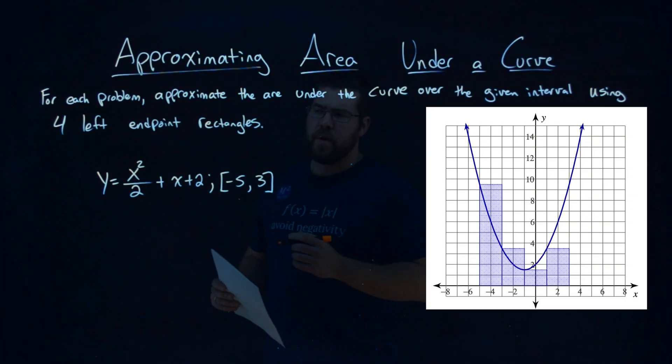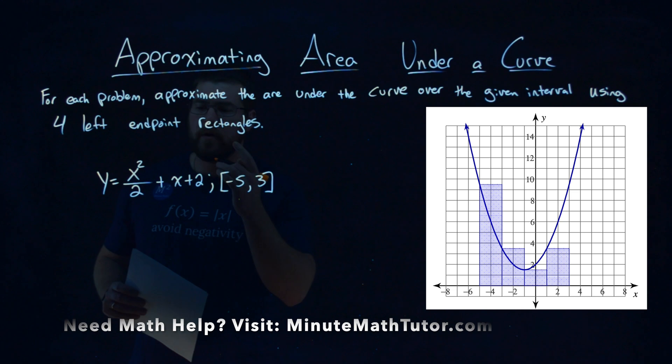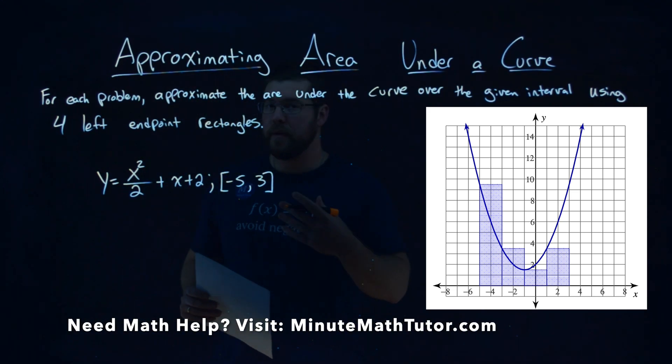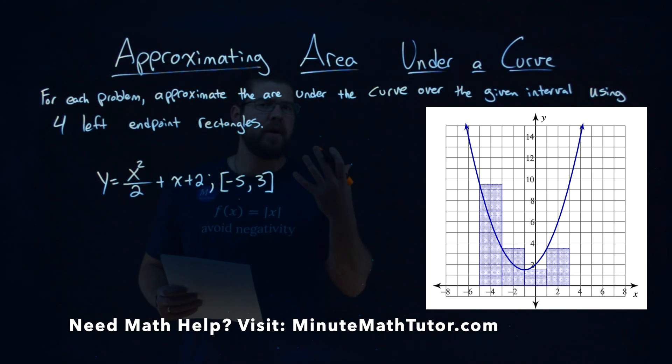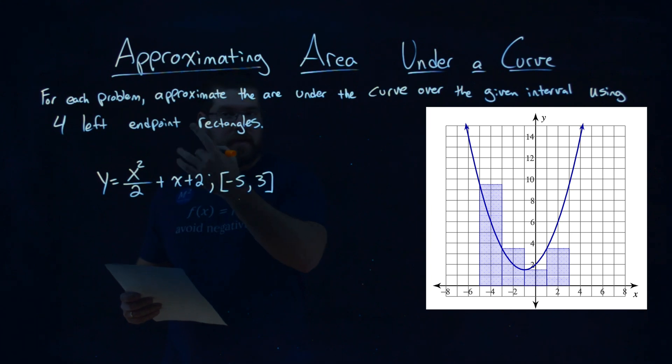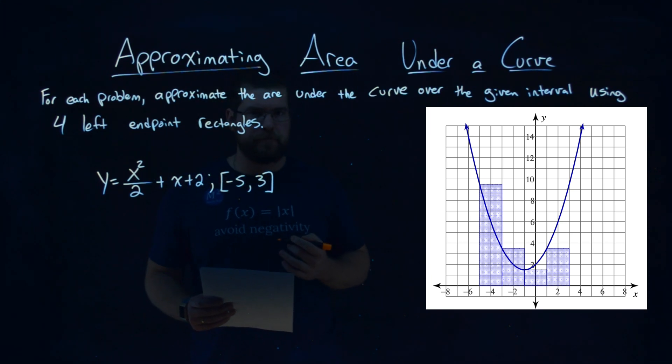We're given this problem: y equals x squared over 2 plus x plus 2, and we're given the interval from negative 5 to 3. We have to approximate the area under the curve given our interval using four left endpoint rectangles.